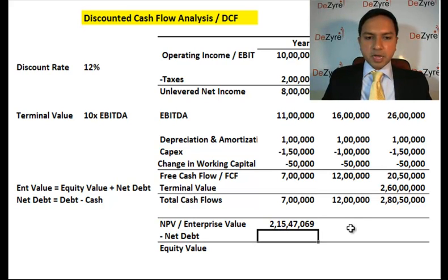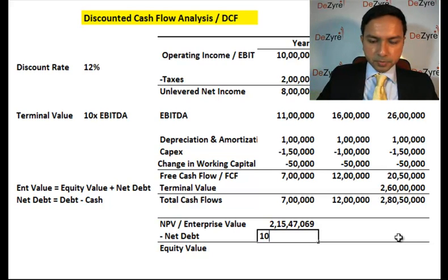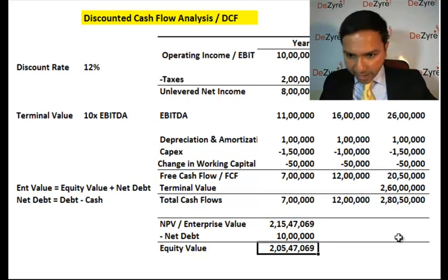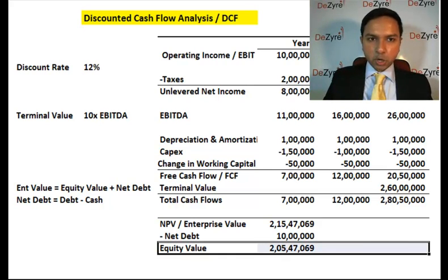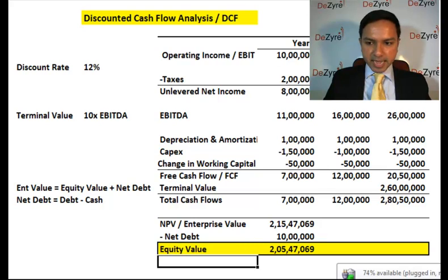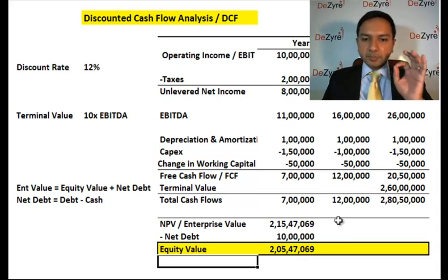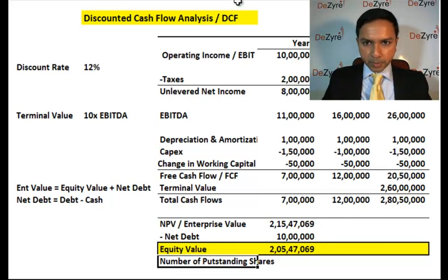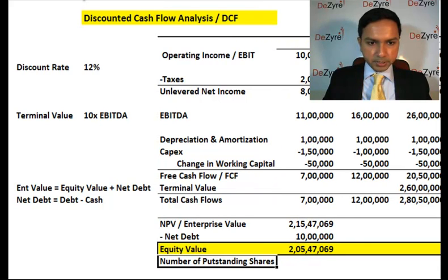Let's say net debt is 10 lakhs. Then the equity value equals the enterprise value minus net debt, giving approximately 2 crores, 5 lakhs, 47,069. That is the equity value of the company, and that is the whole purpose of doing a discounted cash flow analysis — to arrive at the equity value. You can then go one step further: to find the price per share, you divide the equity value by the number of shares outstanding.